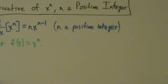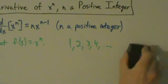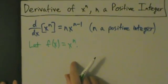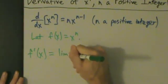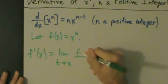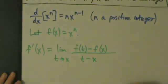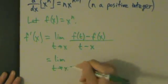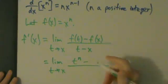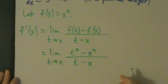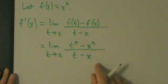Just as a quick refresher, a positive integer is stuff like 1, 2, 3, 4, and so on — whole numbers greater than 0. So we have f of x equals x to the n. The derivative f prime of x — let's use the alternate definition of a derivative: the limit as t approaches x of f of t minus f of x, all divided by t minus x. This equals the limit as t approaches x of t to the n minus x to the n, all over t minus x. If we do direct substitution right away, we get x to the n minus x to the n over x minus x — in other words, 0 over 0, and that's bad.